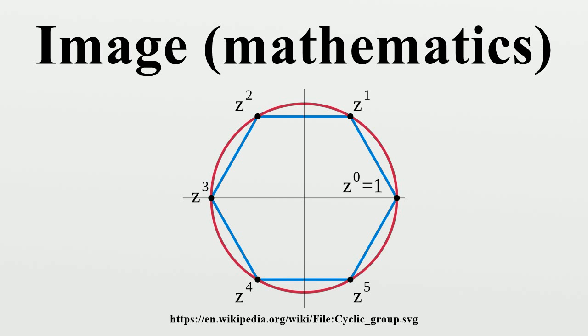but this usage should be avoided because the word range is also commonly used to mean the codomain of f. Examples: 1. f: {1, 2, 3} → {A, B, C, D} defined by the image of the set {2, 3} under f is f({2,3}) = {A, C}.